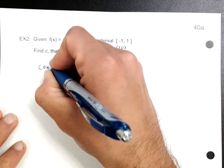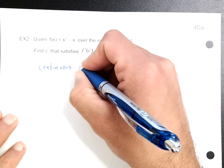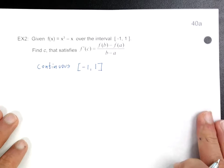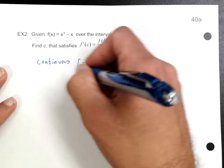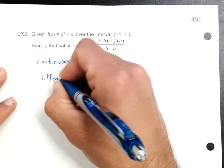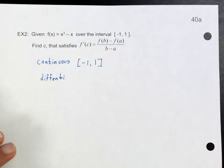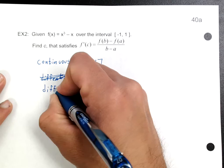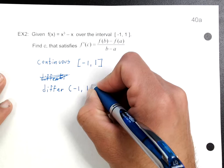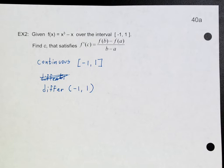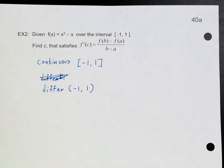The first thing you must do is check if it's continuous. Is it continuous over negative 1 and 1? This is just a cubic function — there's no rational function, no square root — so it's definitely going to be continuous. And it's also going to be differentiable between negative 1 and 1. So now your only job is to figure out a C value that satisfies the Mean Value Theorem.